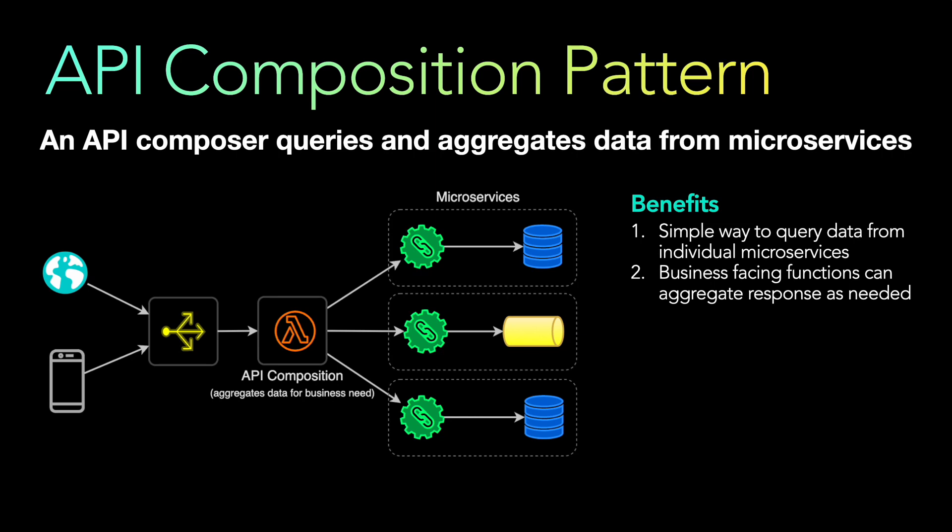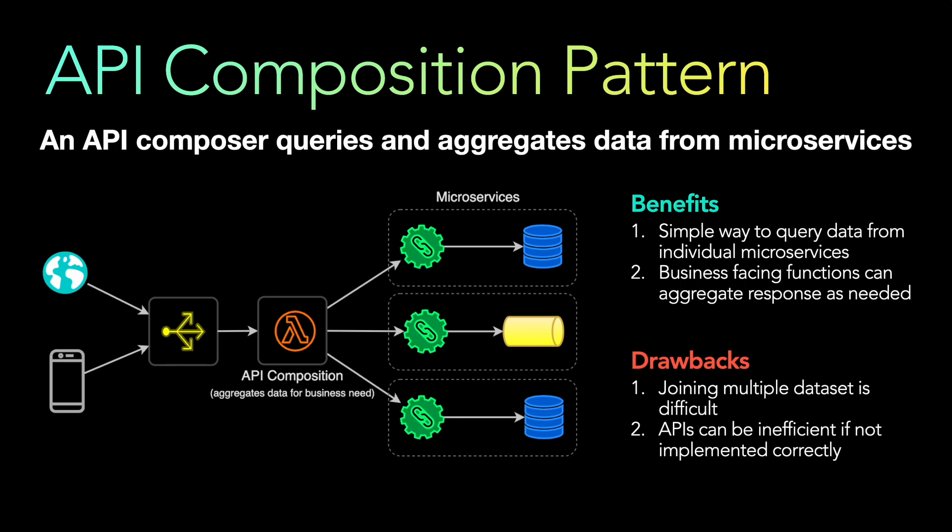The drawbacks include the difficulty of joining multiple data sets, because unlike a single database where you can perform joins directly, here you must implement your own aggregation layer which you don't get out of the shelf. APIs can also be inefficient if not implemented correctly.